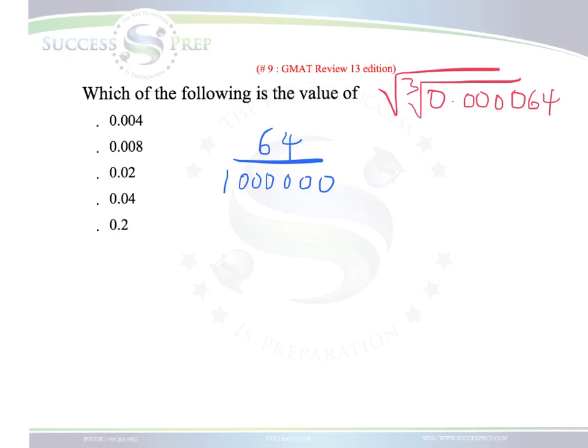Since it took 6 decimal places, we get 64 over 1,000,000, and we still have the cube root over that, and then the square root over that. Now we just focus on the top and bottom of the fraction.